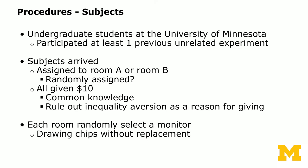The procedure for the original trust experiment was to recruit undergraduate students from the University of Minnesota who had participated in at least one previously unrelated experiment, so subjects are somewhat experienced with computerized lab experiments. When subjects arrived, they were assigned to either room A or room B — the paper doesn't clarify whether this was random, though a good experiment should randomly assign students. Everyone was given $10, which rules out inequality aversion as a reason for giving.